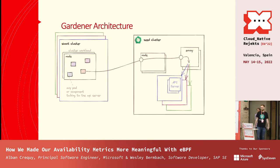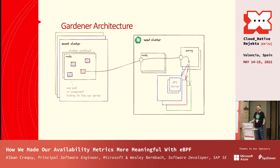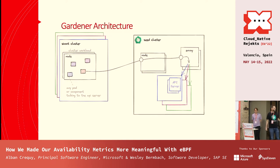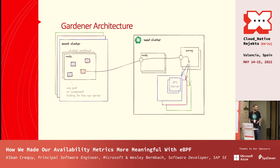In Gardener, we have shoot clusters — normal vanilla Kubernetes clusters the client receives for running workloads. The key difference is the control plane is hosted on a separate seed cluster. Each shoot cluster gets its own corresponding control plane with an API server. We also have an Envoy component acting as a reverse proxy to route connections to the correct API servers, using SNI — server name indication.